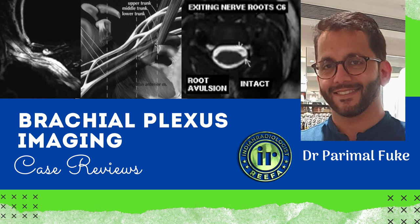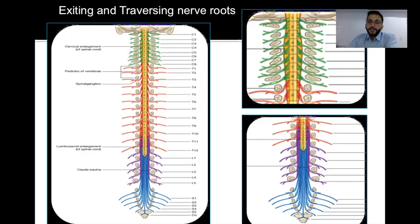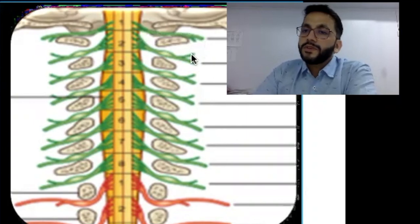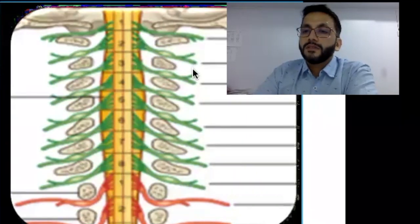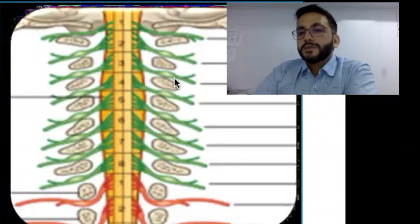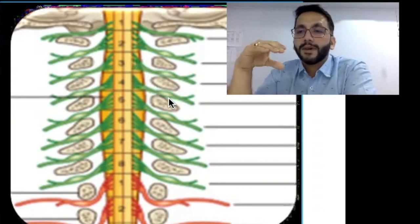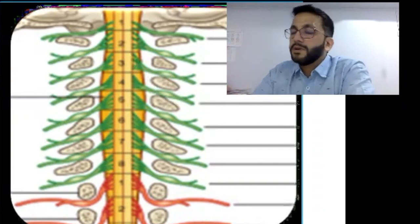Let us understand the concept of exiting and traversing nerves. The first nerve that comes out of the spinal cord is the C1 nerve, which comes out above the lateral process of C1 vertebra. The nerve which comes out from the C1 to neural foramen is the C2 nerve. In the cervical spine, the exiting nerve which comes out from the foramen is the larger numbered nerve.